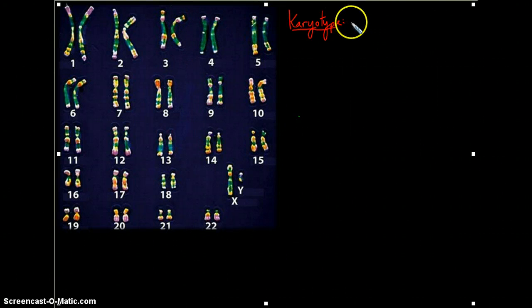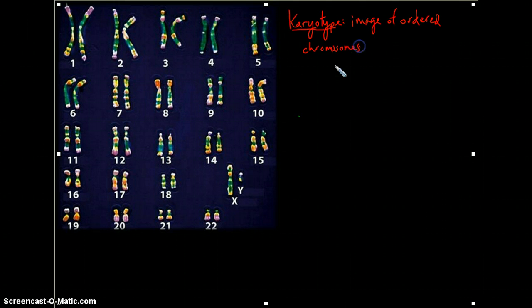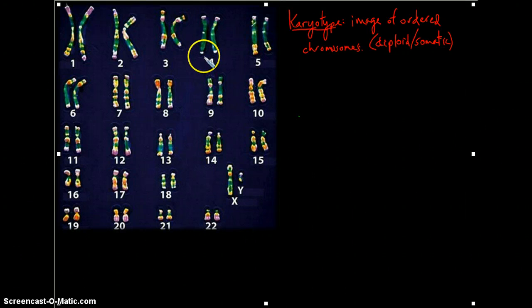So again, a karyotype is an image of ordered or organized chromosomes. This is taken from a diploid or somatic cell, usually in metaphase of mitosis.